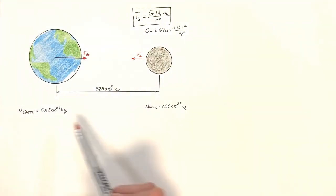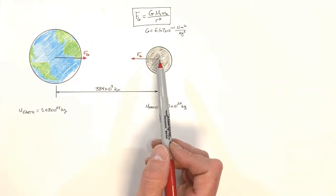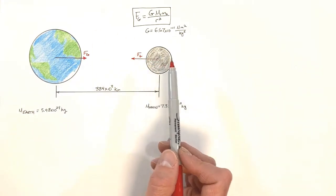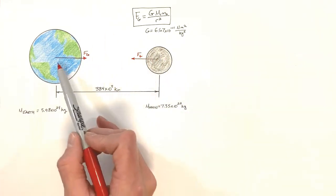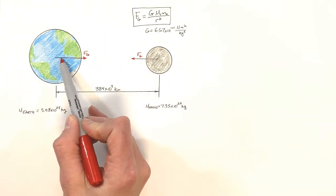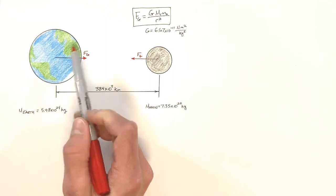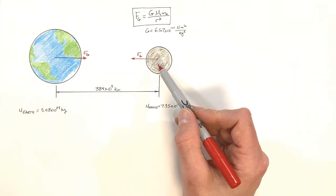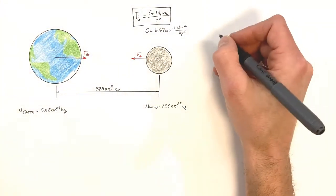The reason the moon winds up orbiting the earth as opposed to the other way around is because the moon is less massive. And really, if you want to get technical, they're actually orbiting their mutual center of gravity — which sits closer to the earth's center — but I don't want to get into center of gravity today.